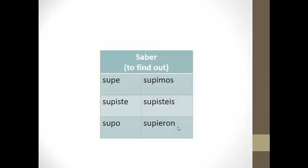The next verb is saber. You may have noticed from the chart earlier that saber in the present tense means to know information and facts. But notice that in the chart, saber in the preterite means to find out. Saber changes its meaning slightly when used in the preterite tense. So if you said 'I found out the truth,' you would say: yo supe la verdad. There are a couple of verbs that have these changes of meaning in the preterite. Saber's conjugation is: supe, supiste, supo, supimos, supieron.